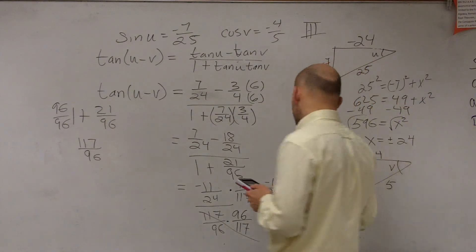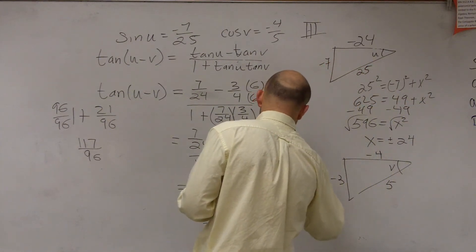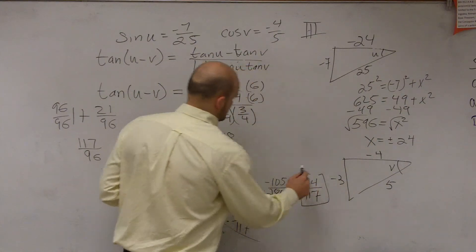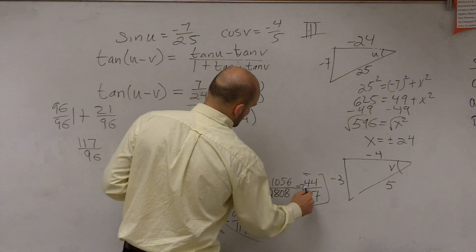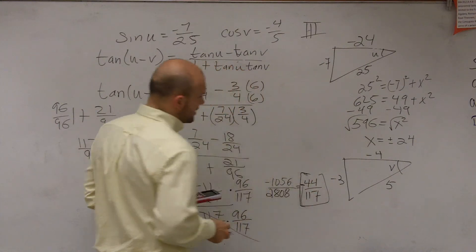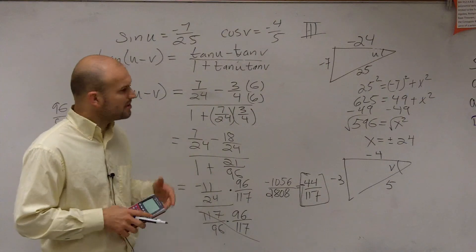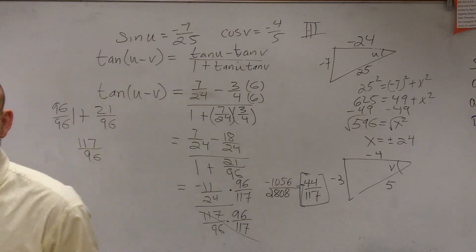You can reduce it to 44 over 117. Negative 44. Yes, negative, thank you. And that would be your final answer. We're not going to have numbers as high as that, but you're going to have to do something like that.